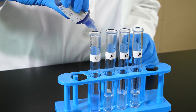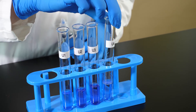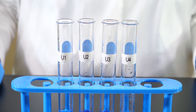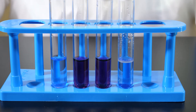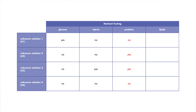We add 20 drops of Biuret reagent to a sample of each of the unknown solutions. After adding the indicator, we swirl each of the test tubes to mix the contents. Since unknown solution 2 and unknown solution 3 both turned dark purple, we know that proteins are present in both solutions. Since neither of the other two unknown solutions turned dark purple, we know that proteins are not present in those solutions. Record your observations in your lab journal.